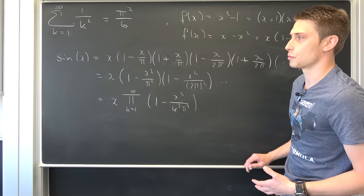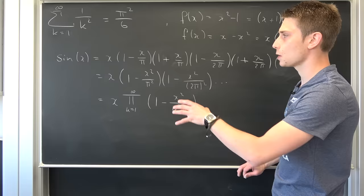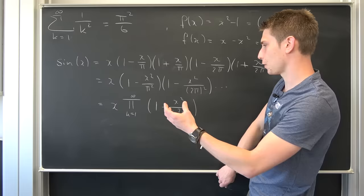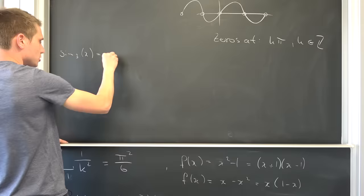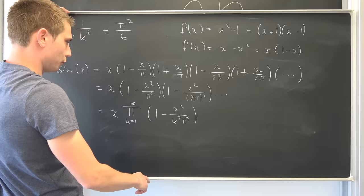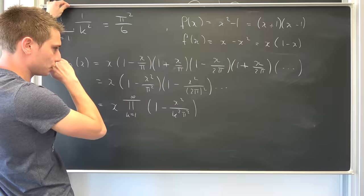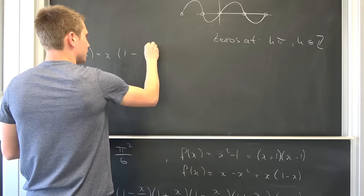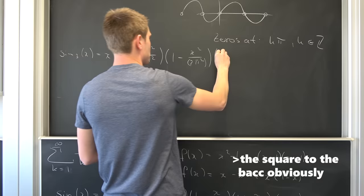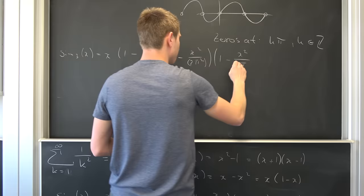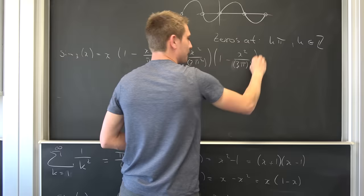Now I would like to collect some terms — this is going to be some algebra, but it's not too hard. Let's take a look at the sine product up until the third iteration. So sine₃(x) is x times (1 − x²/π²) times (1 − x²/(2π)²) times (1 − x²/(3π)²). Those powers of 2 make me dizzy from time to time.